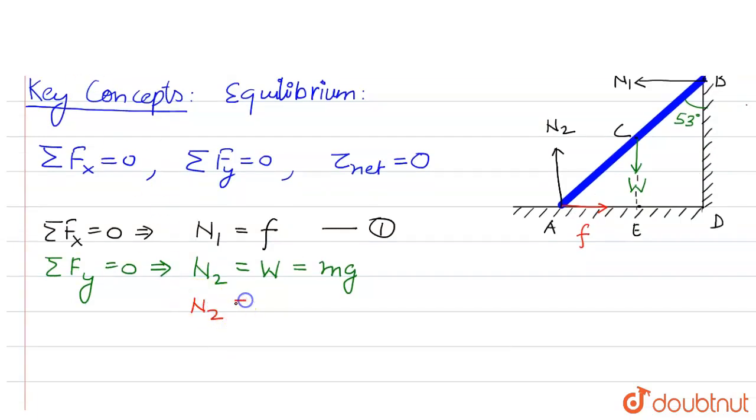So from here we will get N2 equals m times g. The mass of the ladder is 10 and g is 9.8, so from here we'll get N2 equals 98 newtons. So this is our first answer.